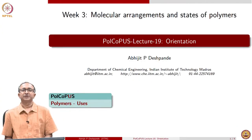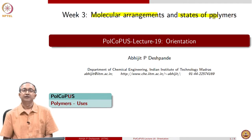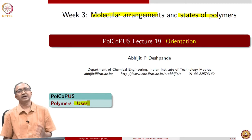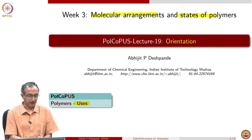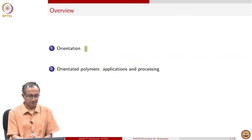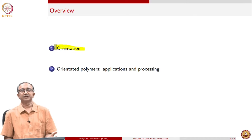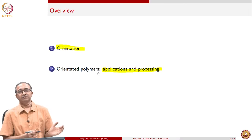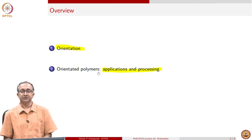Hello, welcome to the third week of this course on polymers. We are looking at molecular arrangements and the states of polymers, and one of the important aspects of the solid state of polymers is related to the state of orientation. In this lecture, we will look at the presence of orientation in polymeric materials from the point of view of applications. We will do this by first quickly reviewing what is meant by orientation and what can orient, and then look at a few examples of where such oriented systems are used and where we can process them.